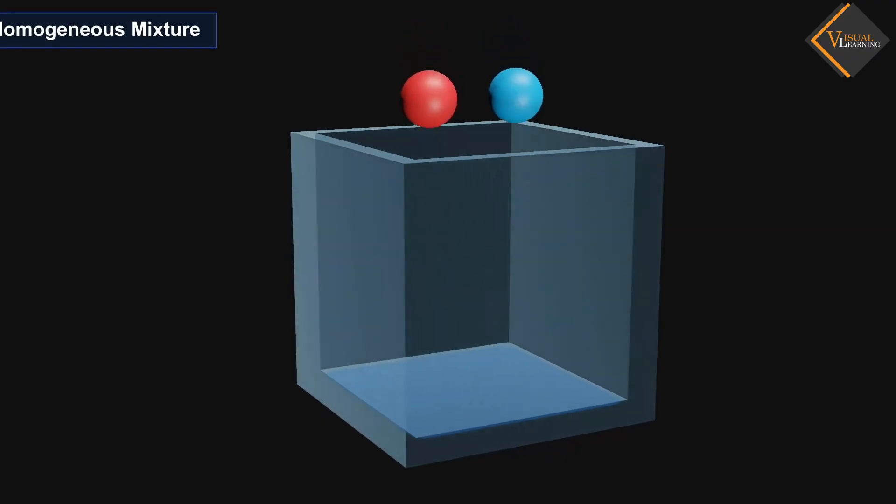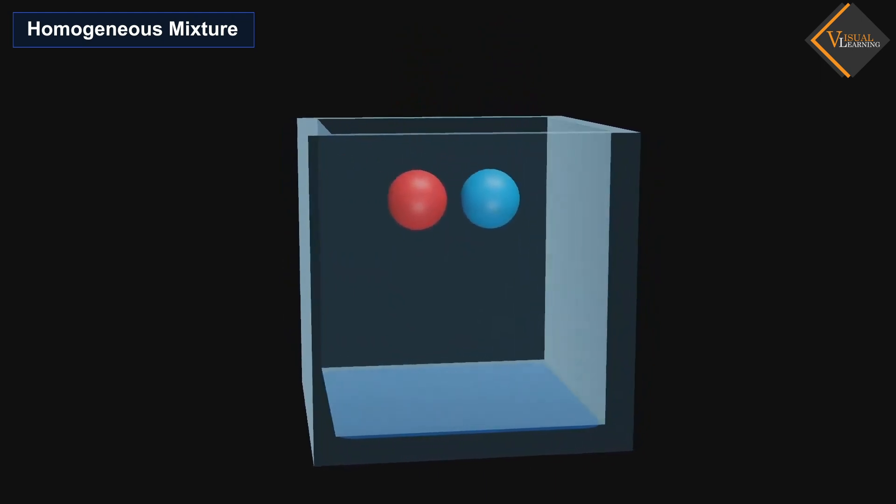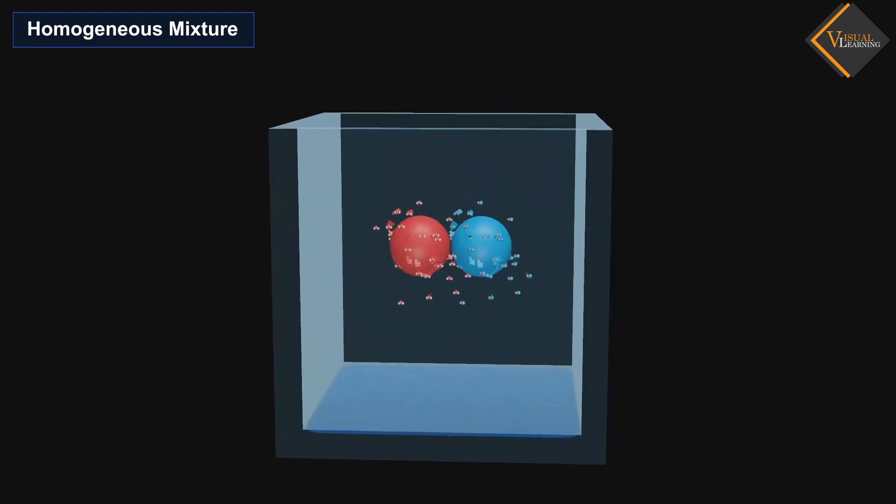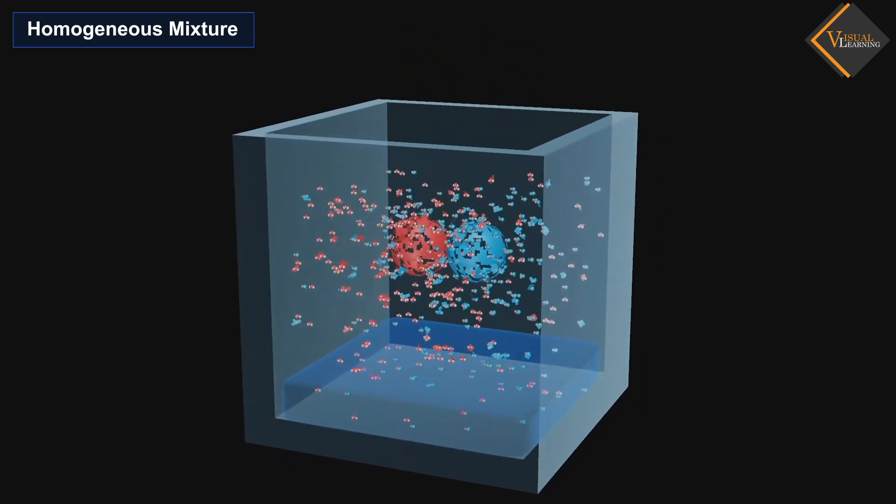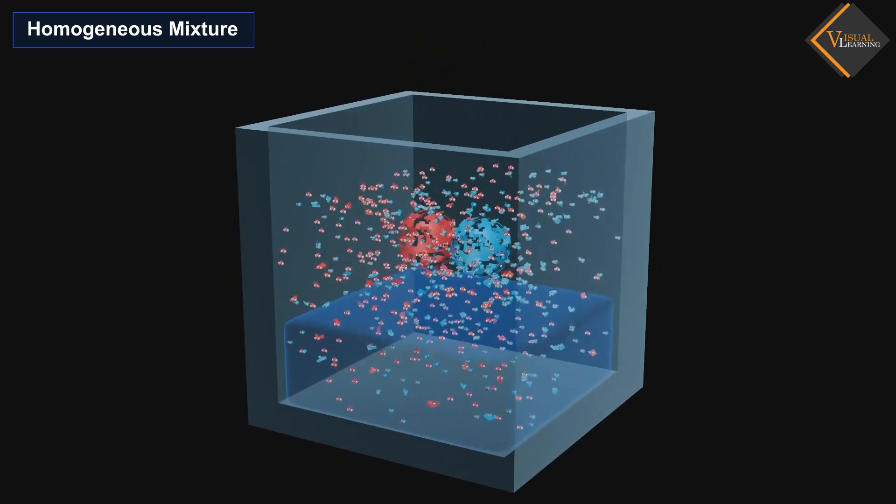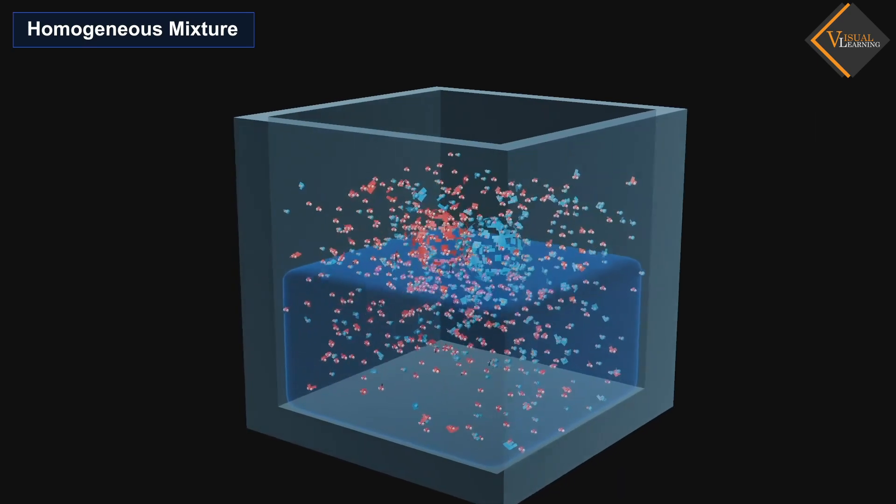Homogeneous mixture - homo means same. The mixtures in which the components have a uniform distribution throughout the mixture are known as homogeneous mixtures.